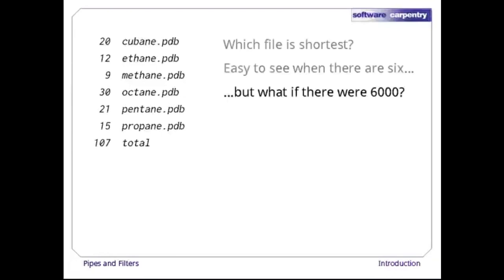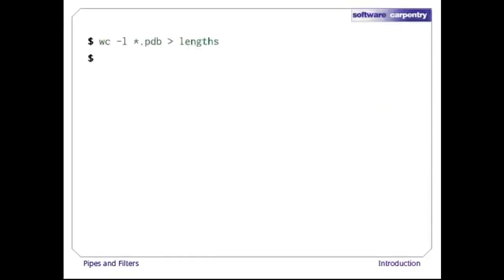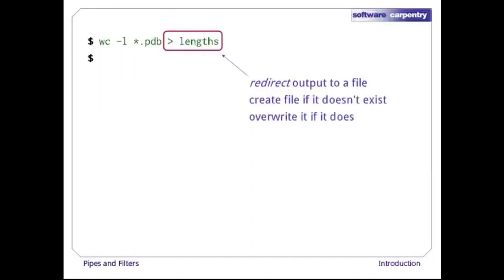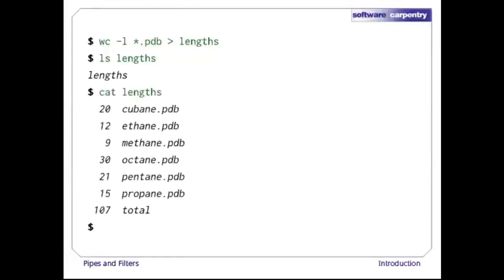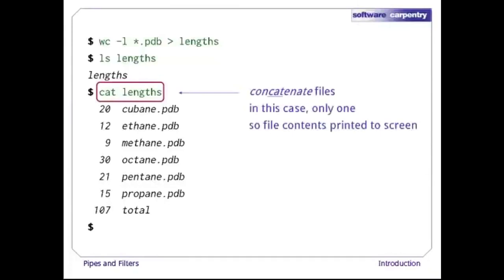Our first step towards a solution is to run 'wc -l *.pdb > lengths'. Greater-than tells the shell to redirect the output to a file instead of printing it to the screen. The shell will create the file if it doesn't exist, or overwrite its contents if it does. Notice that there is no screen output — everything that wc would have printed has gone into the file lengths instead. ls lengths confirms that the file exists, and we can print its contents to the screen using 'cat lengths'. cat stands for concatenate — it prints the contents of files one after another.